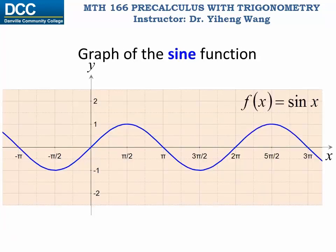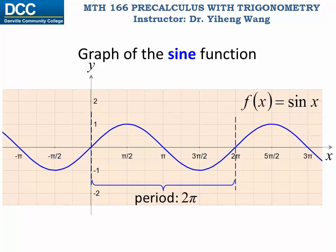In the previous animation we saw the sketching of one full period of the sine function, which covers angles from 0 to 2π — one full revolution of the circle. Before or after that, the function value starts repeating itself. As a result, the graph of the sine function is a continuous wave.